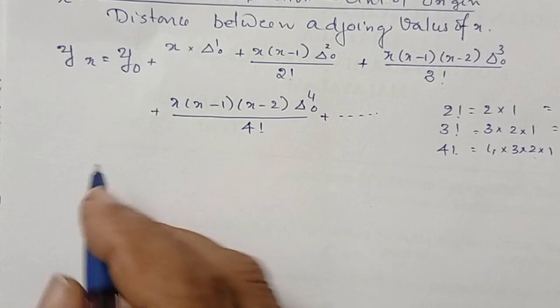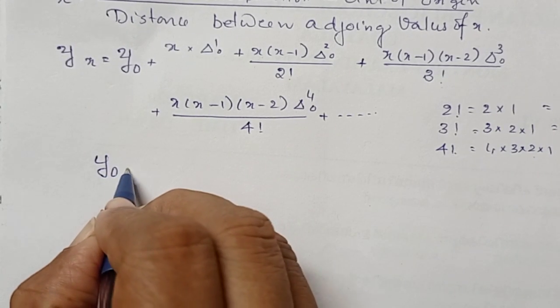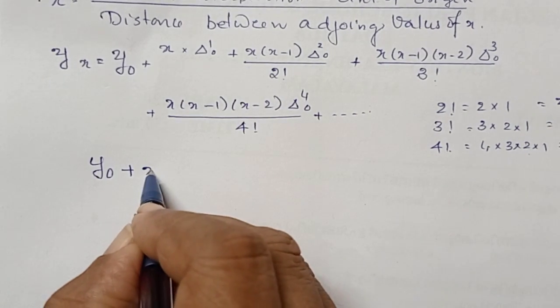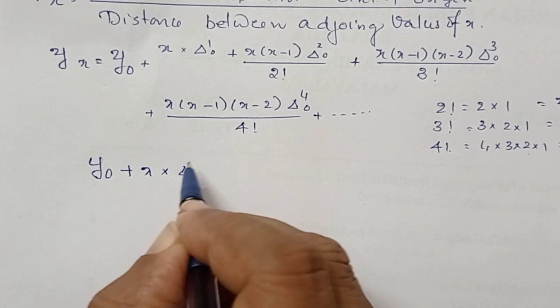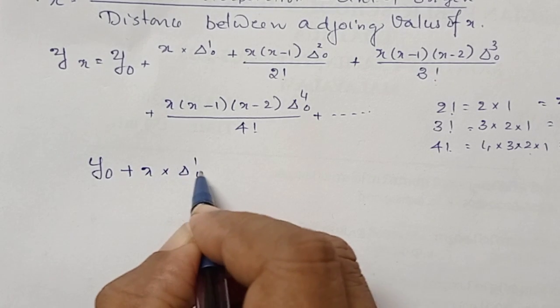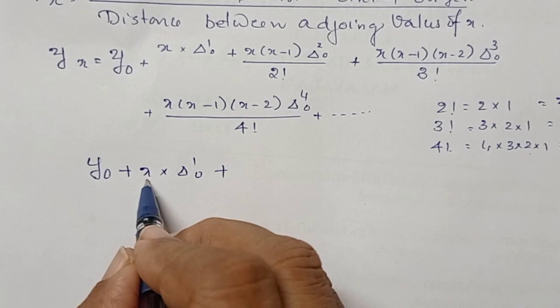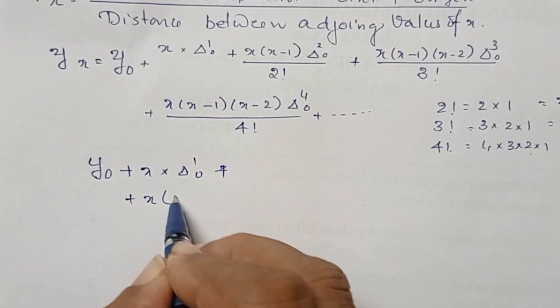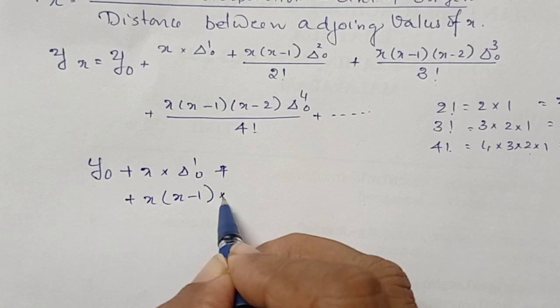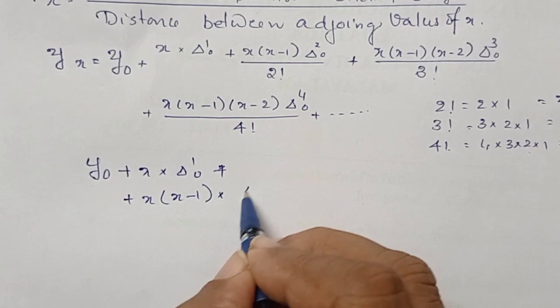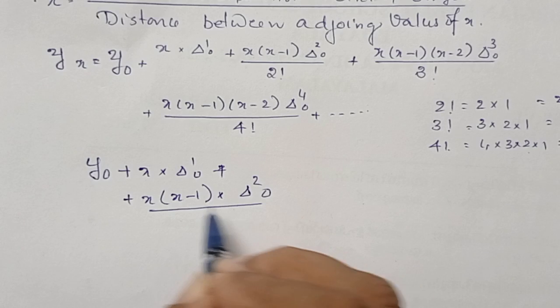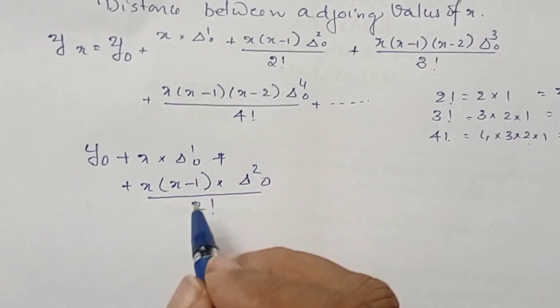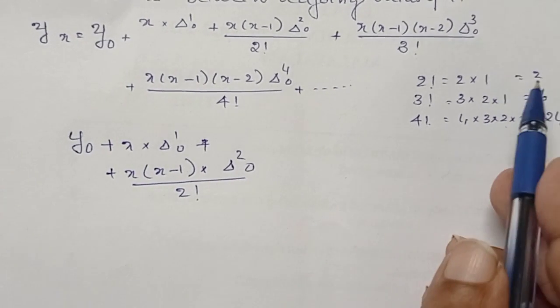First one is y₀, plus x into Δ¹₀, plus x(x-1) into Δ²₀ divided by 2 factorial, where 2! equals 2.